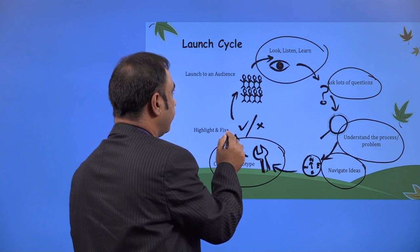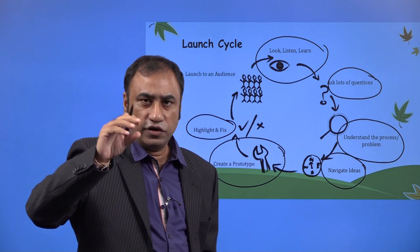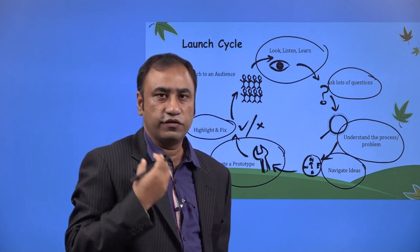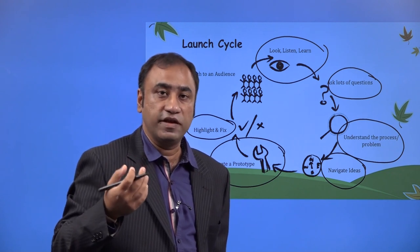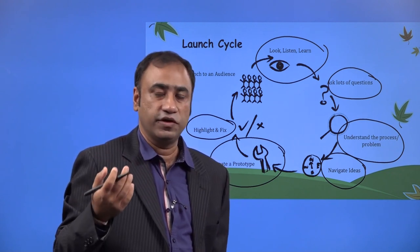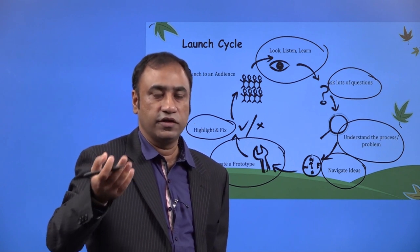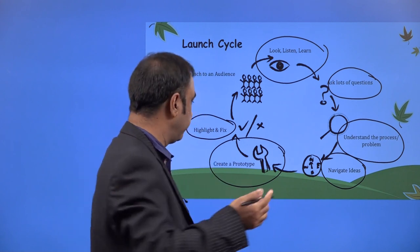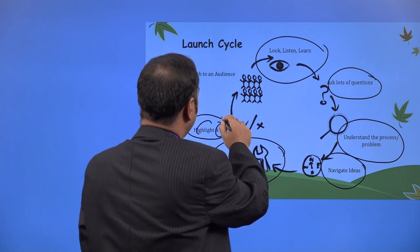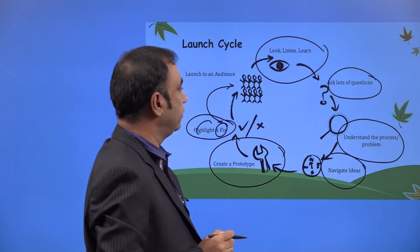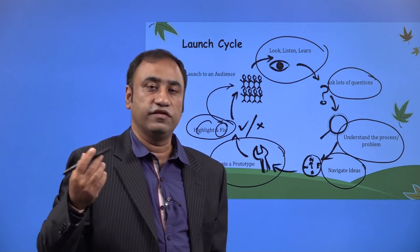Then we launch it, highlight, and fix it. We launch this product to a few people, take user feedback — what are they saying? The users are the people who have the same problem for whom you are creating this product. Go back and ask them, 'This is the product, can you check it? Can you give your feedback?' Come back with the feedback, highlight it, fix those issues, and launch it to the audience. This is the entire cycle we will be learning through the design thinking process.